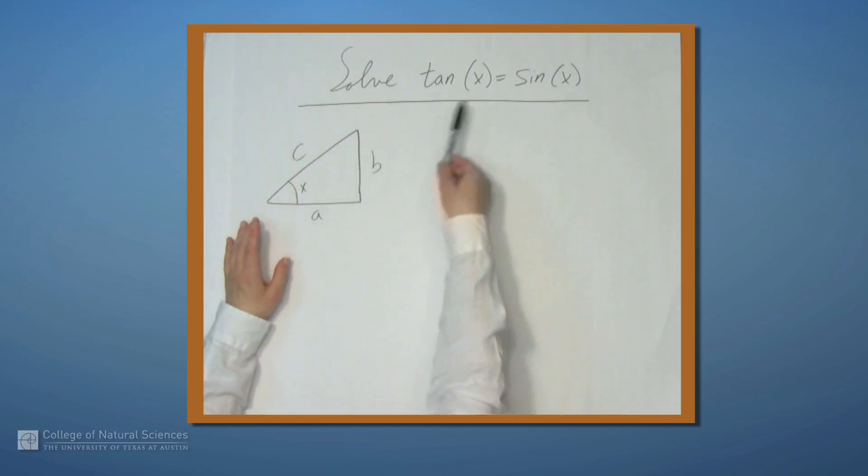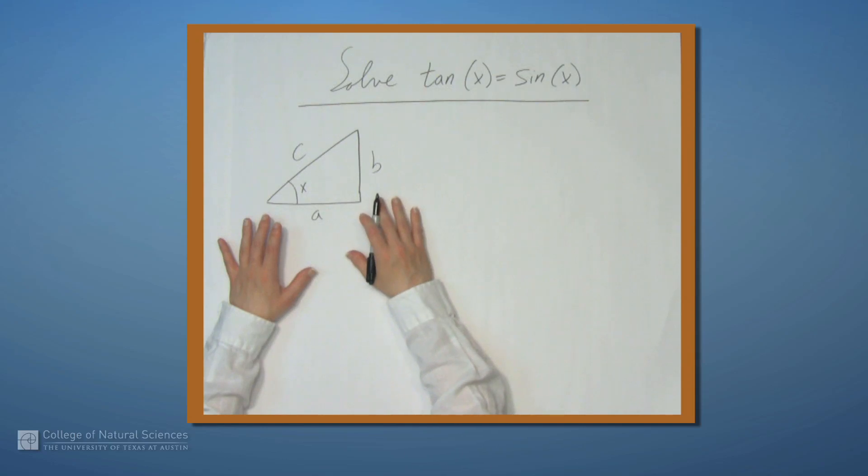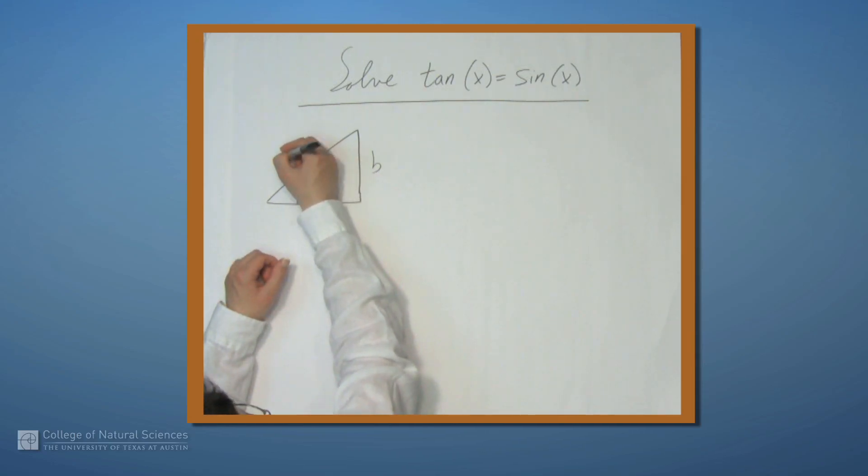Now since we're dealing with trig functions, the actual size of this triangle doesn't really matter, so we may as well set c equal to 1. It's going to make a few things easier.